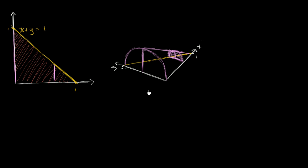Given what I've just told you, I encourage you to pause the video and see if you can figure out the volume of this three-dimensional figure. One way to think about it is to split the figure into a bunch of disks. If you figure out the volume of each of those disks and sum them up, that's a good approximation. Then if you take the limit as you get an infinite number of infinitely thin disks, you'll get the exact volume.